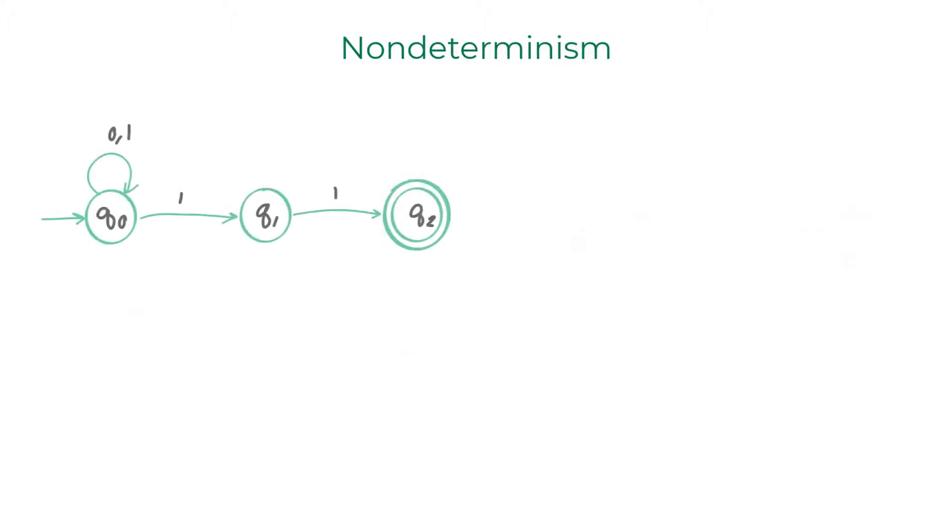Take a look at this diagram. Clearly, this machine violates the basic rules of DFA. The state Q0 has multiple transitions for the character 1 and the state Q1 does not have a transition for character 0.